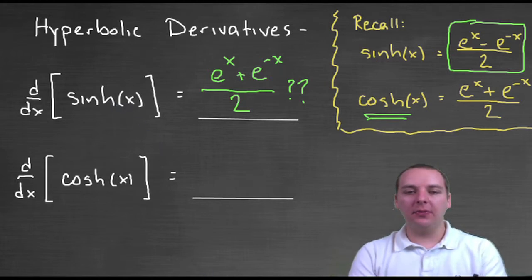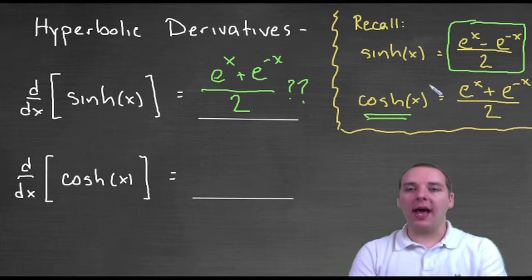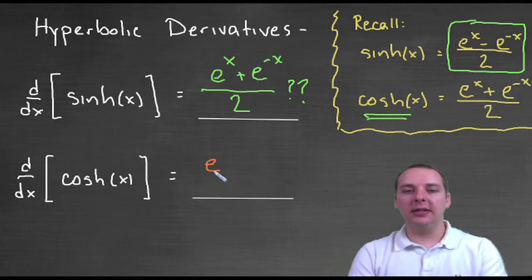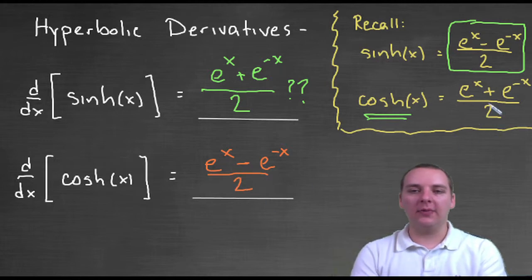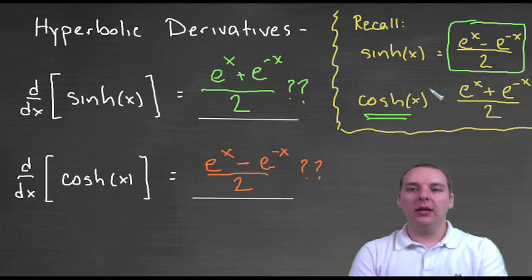Let's do the same thing for hyperbolic cosine. Again, the one half that's in the expression is a tag-along one half. Derivative for e to the x is e to the x. Derivative for e to the negative x is minus e to the minus x. All over two, of course, right? That one half tag-along constant. So who is this? Who does he look like? Well hey, that's hyperbolic sine of x, it's very interesting.